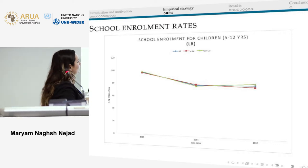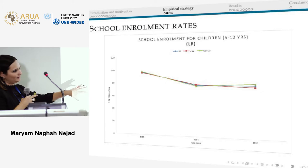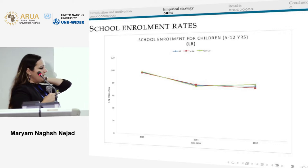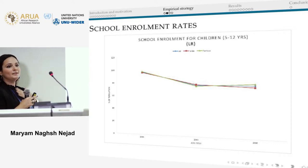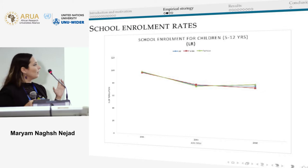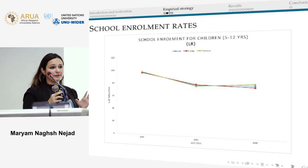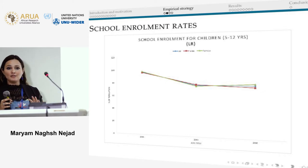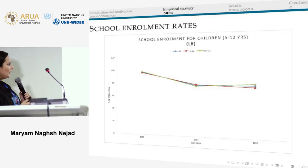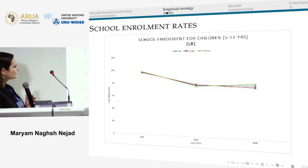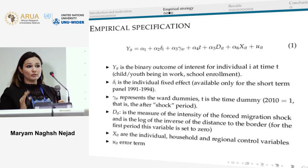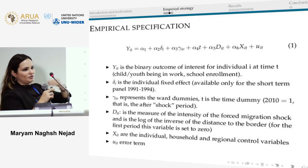Looking at school enrollment rates in the Kagera region, there was a dramatic drop after 1994. This is for children aged 5 to 12 — the mandatory school attendance age under Tanzanian law. The enrollment rate is very low, and we try to explain whether there is any causal reason for this drop in schooling.